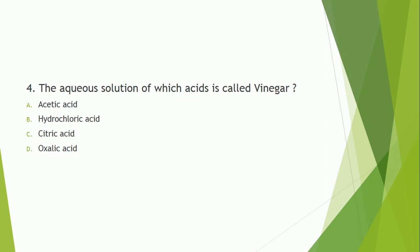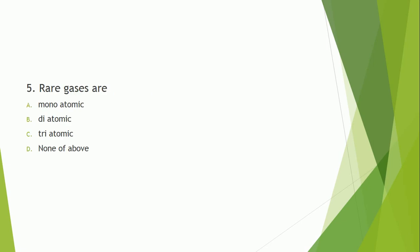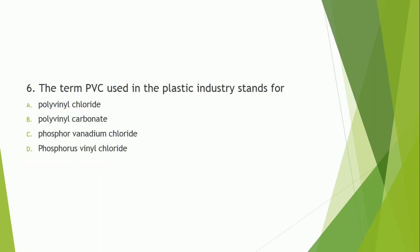Question number 4: The aqueous solution of which acid is called vinegar? The correct answer is option A — acetic acid. The aqueous solution of acetic acid is called vinegar. Question number 5: Rare gases are what? The correct answer is option A — rare gases are monoatomic.